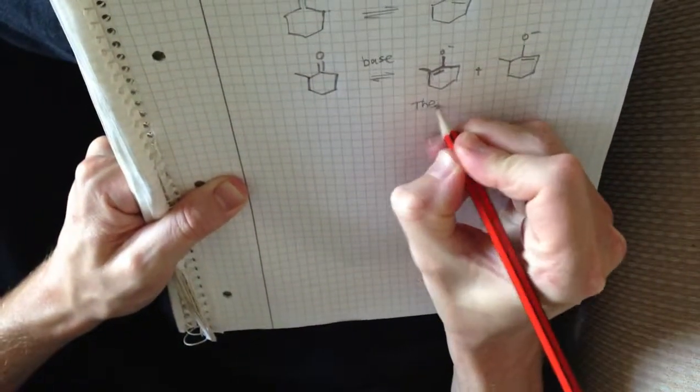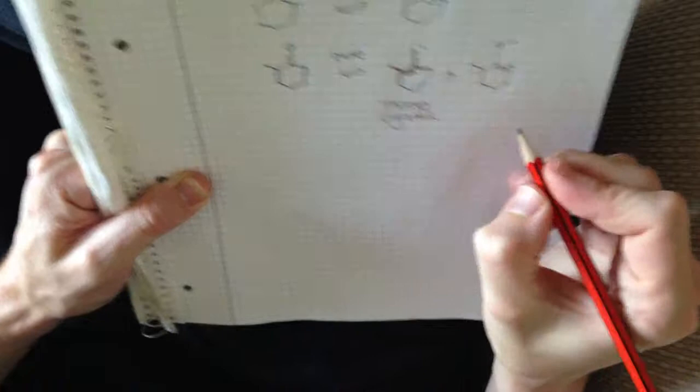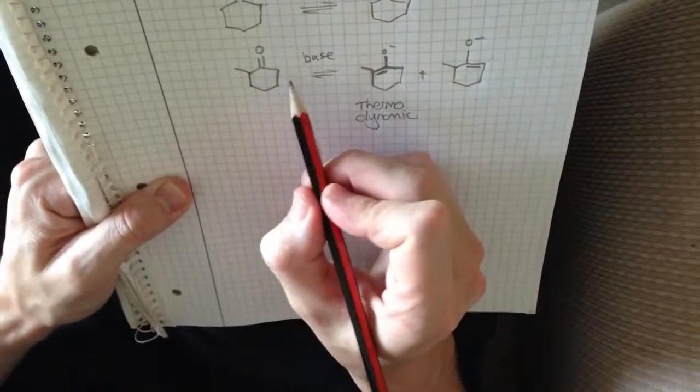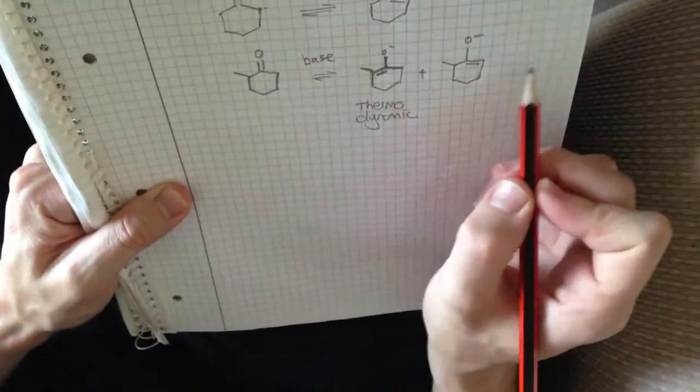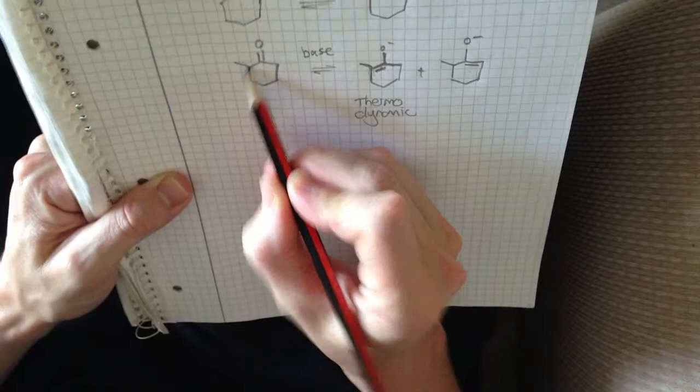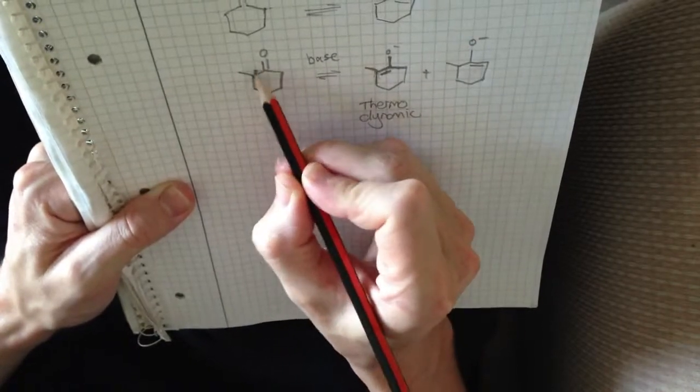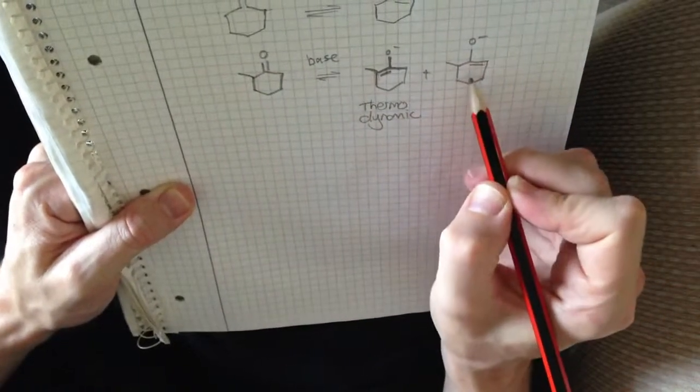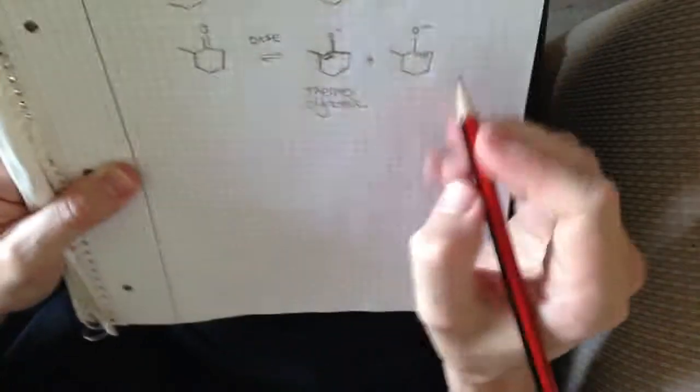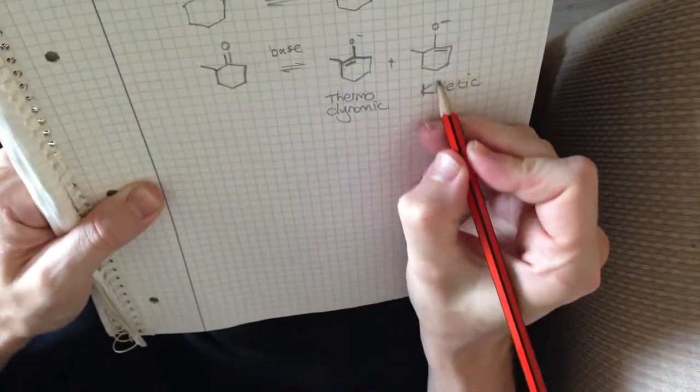And so we would call this one the thermodynamic. And this one over here is actually the one which, in a sense, if you think about the possibilities here for when deprotonation occurs, you've got two H's on this carbon and one over there. So statistically speaking, it's much easier to take away. You've got two protons to choose from versus one over there. So this enolate over here tends to form faster because there's just more options for it to deprotonate. So this one is called the kinetic enolate because it is formed faster.